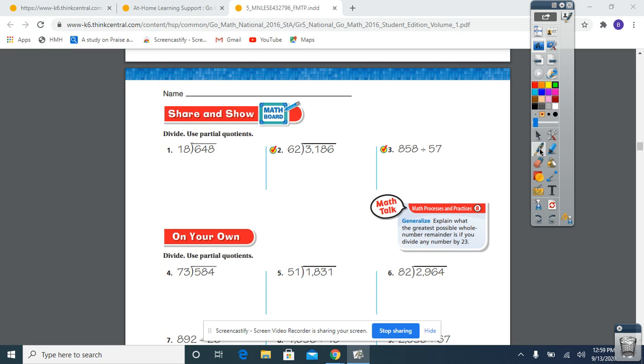We're going to look at number one first. We are dividing 648 by 18. The first question we're going to ask ourselves is how many times does 18 go into 6? 18 is bigger than 6, so we need to move to the next digit. Next, we're going to ask ourselves how many times does 18 go into 64.